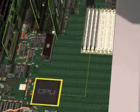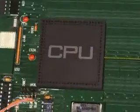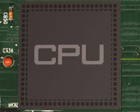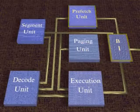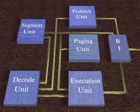The brain of the PC is the Central Processing Unit, or CPU. It is a complex microprocessor that consists of hundreds of thousands or even millions of transistors. The CPU is comprised of six main components, each performing a separate task.